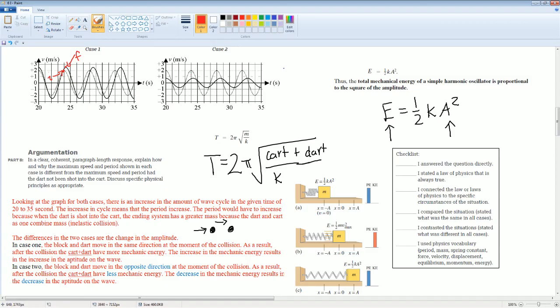In the second case, look at it. This is the initial. And, the solid line was your final. Here, it went down. In case 2, the block and the dart moves in the opposite direction. So, it was here, and here. They're in the opposite direction. As the result of the collision, the cart plus dart has less mechanical energy. The decrease in mechanical energy results in the decrease in the amplitude of the wave. Likewise, that means if this goes down, if the energy goes down, the aptitude also has to go down. That makes sense here.